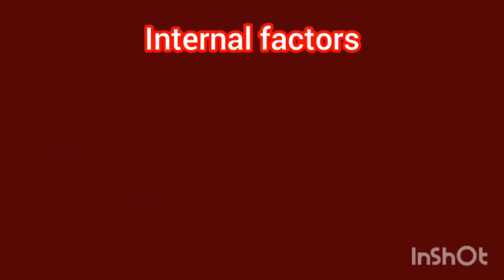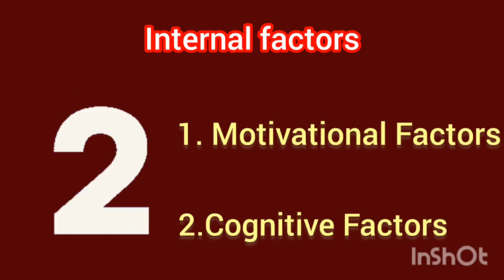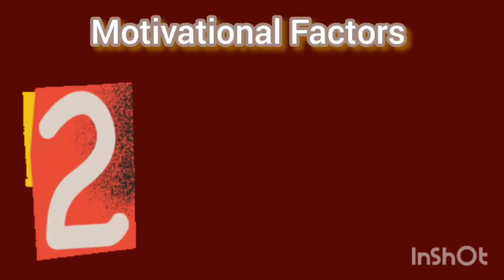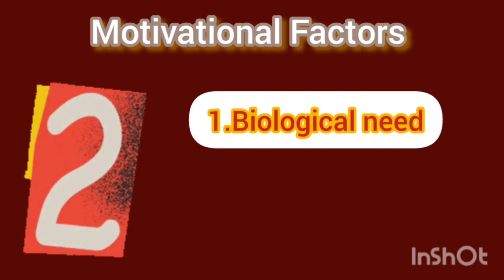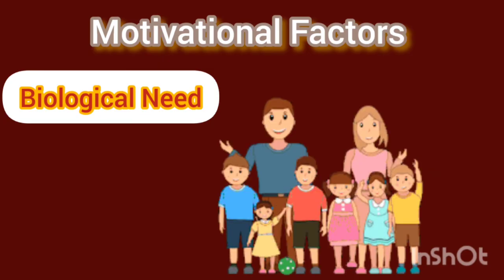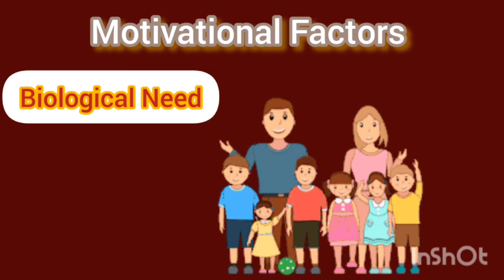Then what are internal factors? Internal factors are divided into two: one is motivational factors and two is cognitive factors. Motivational factors are further divided into two needs: one is biological need and another one is social need. Biological need — a child at a younger age thinks of consuming lots of chocolates, in a later stage consuming fast food or fancy food, and in the aged stage thinking of hygienic food. This is known as biological need.